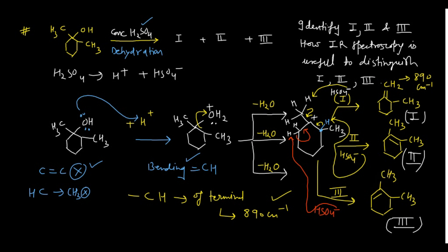For product 3, the alkene is trisubstituted — there is one hydrogen on the double bond carbon. The CH bending absorption is present, but because the double bond is within the ring, the ring constraint decreases the vibrational frequency. So the bending vibration for product 3 appears at around 820 cm⁻¹, compared to 890 cm⁻¹ for the exocyclic terminal alkene of product 1. This is how you differentiate all three compounds using IR spectroscopy, and this may be an important problem for your upcoming examination.